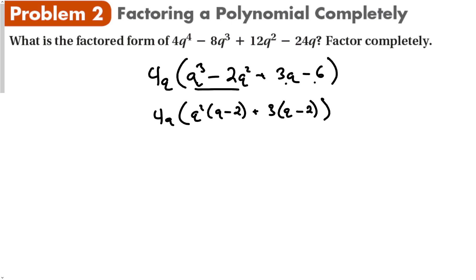The common factor between both of those is a 3, and we're left with a q minus 2. Well, that's good, because now we can group everything together. And because this is going to be multiplication, polynomial multiplication, I don't need these outside parentheses anymore, because it doesn't matter what order I multiply the terms together. So let's just put the 4q in the front, the q squared plus 3, and the q minus 2. And that would be my answer.